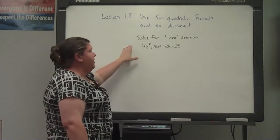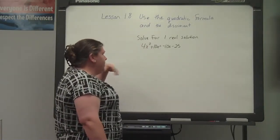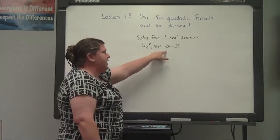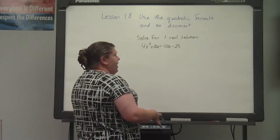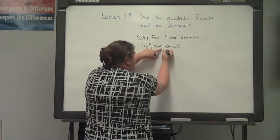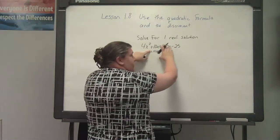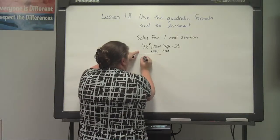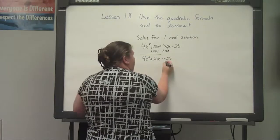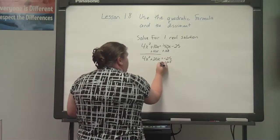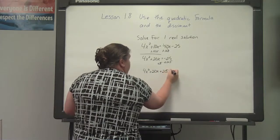The next concept is solving using the quadratic formula for one real solution. The equation is 4x squared plus 10x equals negative 10x minus 25. The first thing we want to do is put it into standard form, meaning everything is on one side of the equal sign. So I add 10x to both sides, giving 4x squared plus 20x equals negative 25. Then add 25, giving us 4x squared plus 20x plus 25 equals 0.